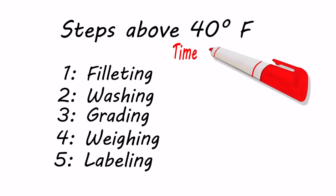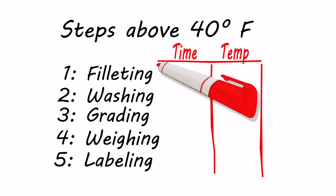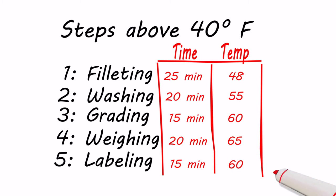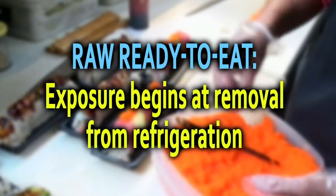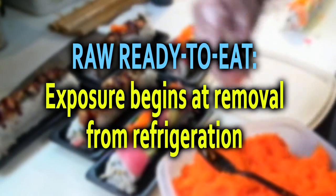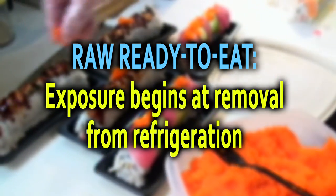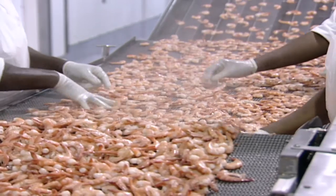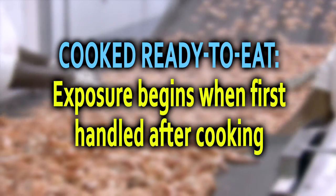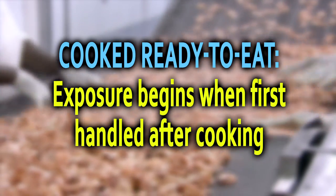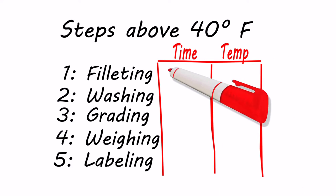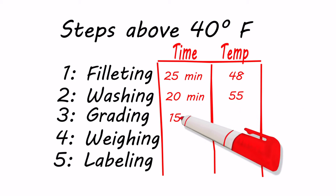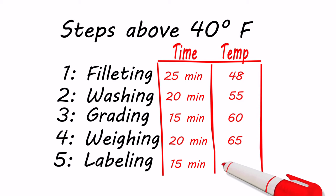Look at each unrefrigerated processing step and determine the exposure temperatures and exposure time for each. For raw ready-to-eat products, exposure time typically begins when the product is removed from refrigerated storage into ambient temperatures above 40 degrees. For cooked ready-to-eat products, exposure time will likely begin when the product is first handled after cooking. Determine how long each step lasts and the internal product temperatures, considering worst-case conditions.